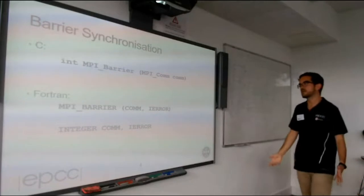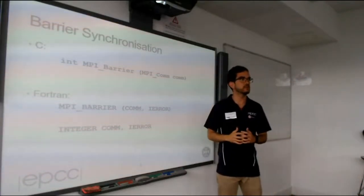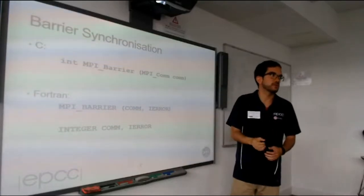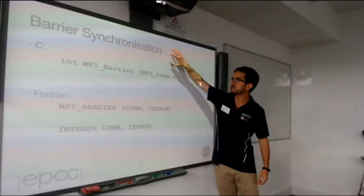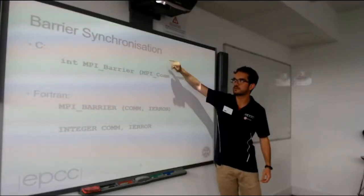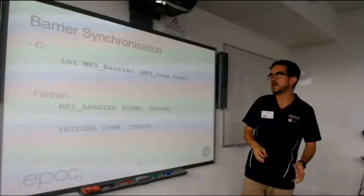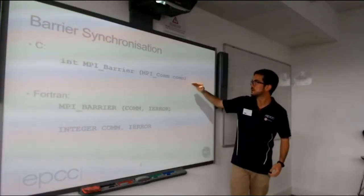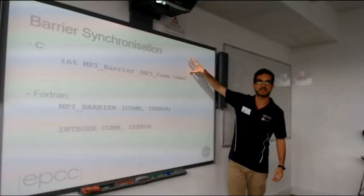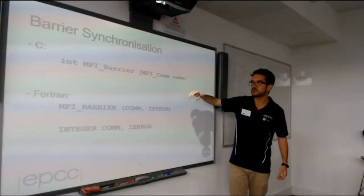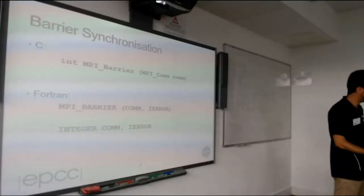For example, one use case could be if you are calculating a matrix and want to write it to a file. Above the barrier, you generate and calculate the matrix elements. You reach the barrier to make sure the whole matrix is calculated. After that, you can write the matrix to a file or display it.